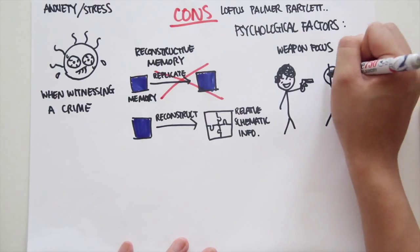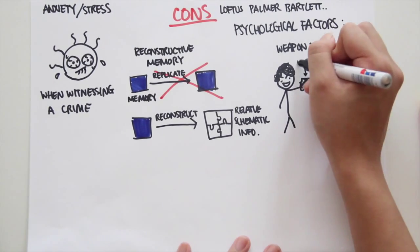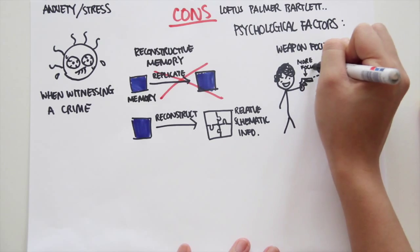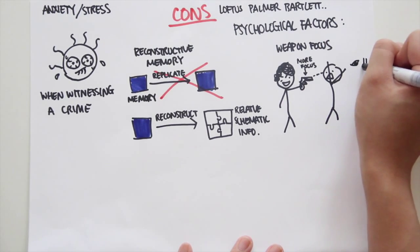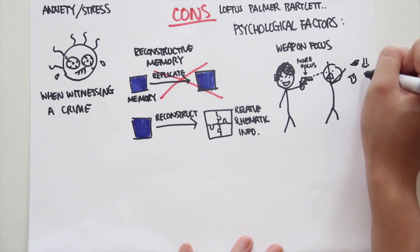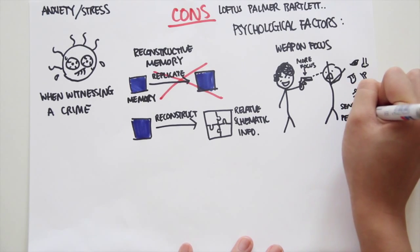Weapon focus. In a crime where a weapon is involved, it is not unusual for a witness to be able to describe the weapon in much more detail than the person holding it. This is due to the brain concentrating on the dangerous object and ignoring some other useless facts. This is clearly linked to sensory perception as a way of knowing.